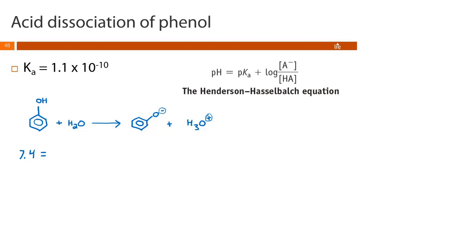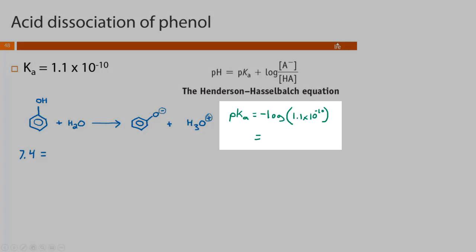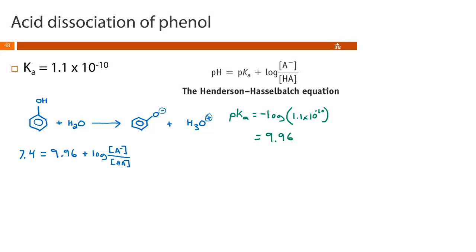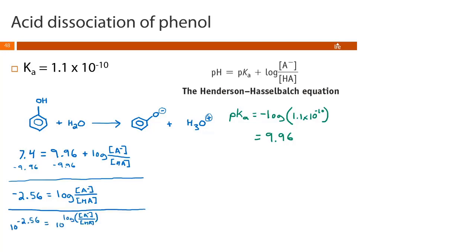In math, when you take the 'p' of something, it means the negative log. So pKa is simply the negative log of our acid dissociation constant. We throw that into our calculator and get 9.96. Plugging into the Henderson-Hasselbalch equation, we subtract 9.96 from both sides to isolate the log, giving us −2.56. We then take the anti-log of both sides — applying 10 to the power of both sides — and we get 0.00275.